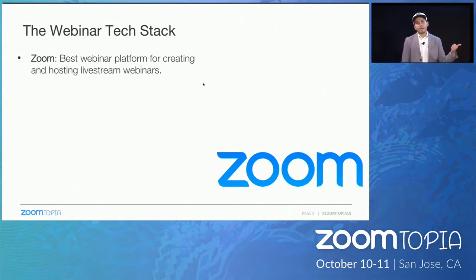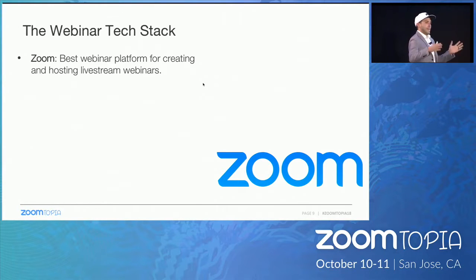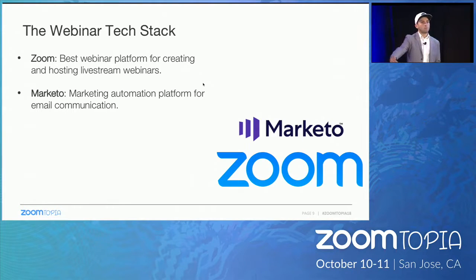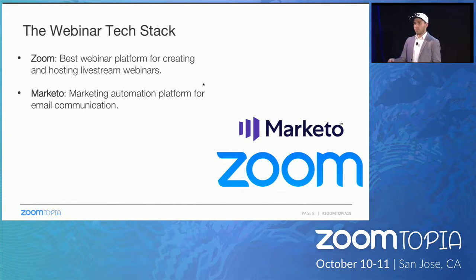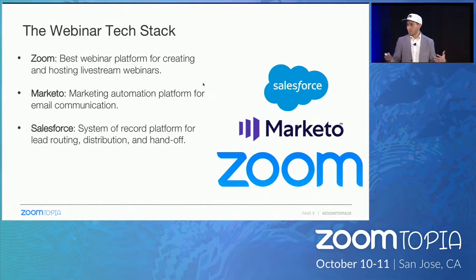I looked at Blue Jeans — it wasn't it. I looked at WebEx — it wasn't it. I looked at GoToMeeting — it wasn't it. I found Zoom two and a half, three years ago, and I thought: this is the best webinar platform in the market. So we chose Zoom. Next, we needed a marketing automation platform. When you have marketing automation set up correctly, the people who register for your webinars can communicate with you — and you with them.